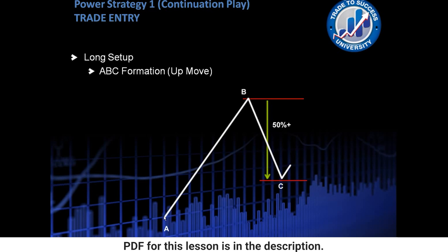So what we've got is we want price formation to go up and then come back down, forming an ABC formation. Now what we need is for this retracement from B to C to be 50% or more of the A to B leg.